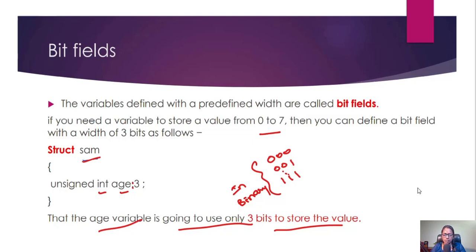Bit fields in C++. The variables defined with a predefined width are called bit fields. If you need a variable to store a value from 0 to 7, then you can define a bit field with the width of 3 bits.